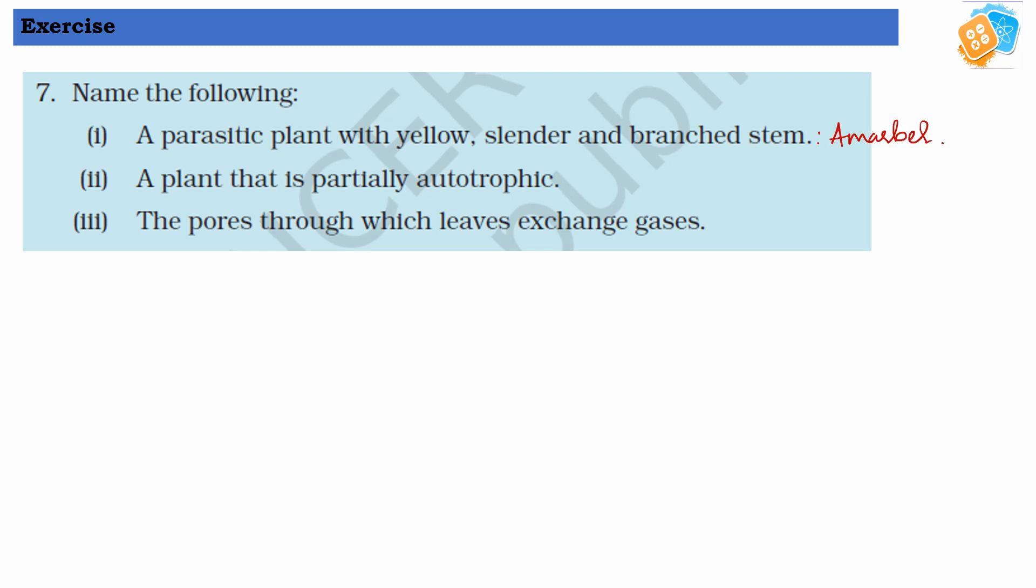Second, a plant that is partially autotrophic. The name would be pitcher plant or insectivorous plant because they are green and doing photosynthesis, and they are trapping insects and absorbing some nutrition from the insects. So they are partially autotrophic.